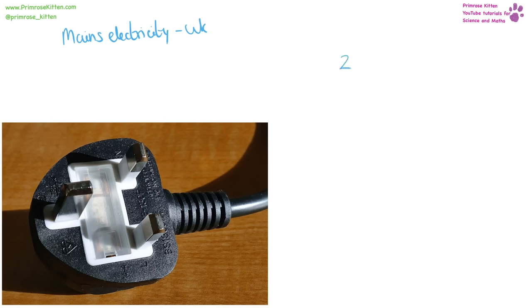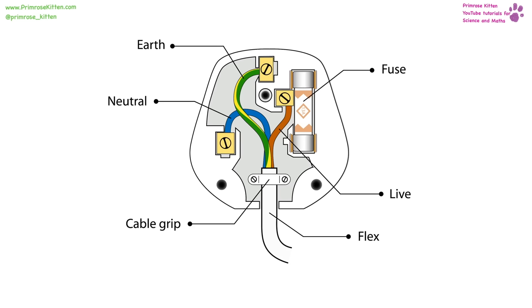Mains electricity in the UK is 230 volts and 50 hertz. Inside a plug socket we have a fuse which has a very small bit of wire going through it — this wire will melt if too much current goes through it, which is the safety feature of the plug. We have the live wire, the earth wire — another safety feature — the neutral wire, the pins holding them down, the cable grip, and the cable which is double-encased in plastic. The plastic casing is another safety feature of the plug.